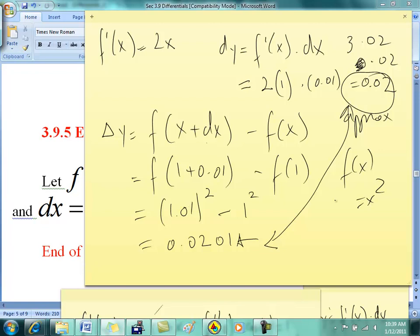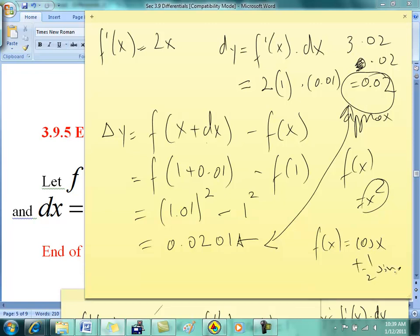Now, this calculation is not too difficult because it's x squared. What if it was something like cosine x plus one half sin x? You can see how much more difficult it would be to find the change in the function, as compared to doing this formula here.